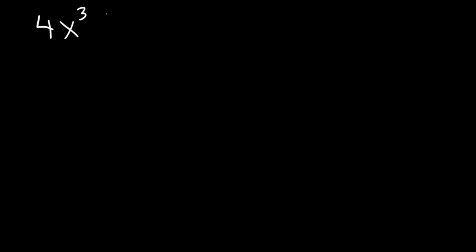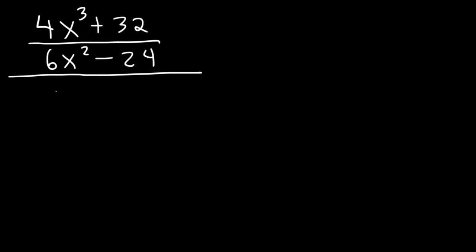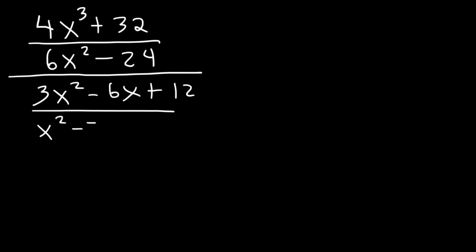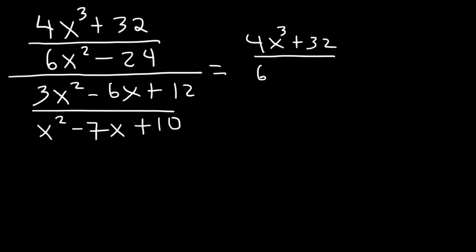Let's try this one: 4x cubed plus 32 over 6x squared minus 24, divided by 3x squared minus 6x plus 12 over x squared minus 7x plus 10. To simplify this complex fraction, we can rewrite it as 4x cubed plus 32 over 6x squared minus 24, divided by 3x squared minus 6x plus 12 over x squared minus 7x plus 10.